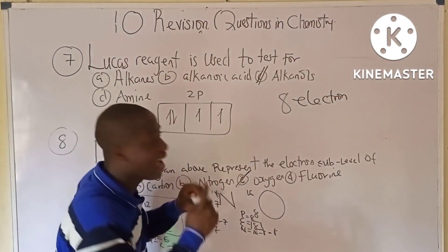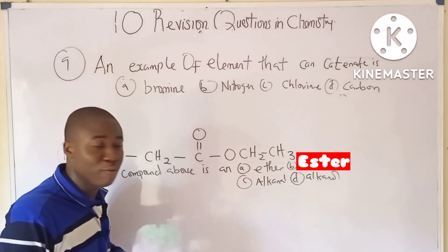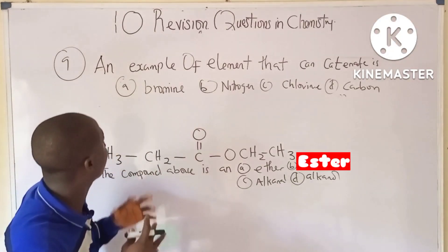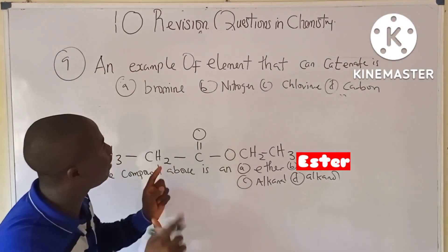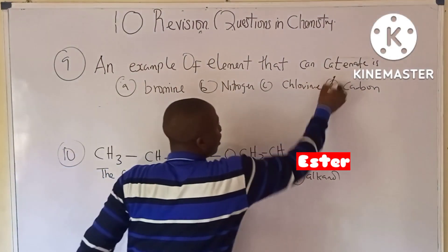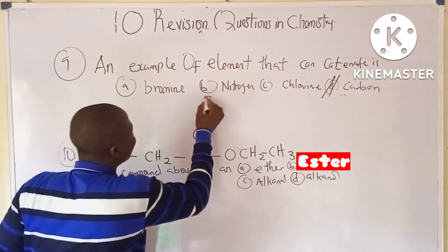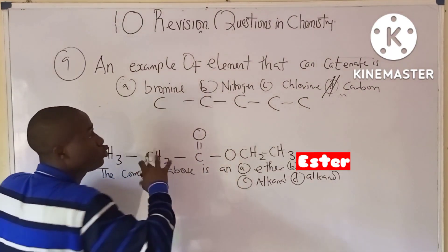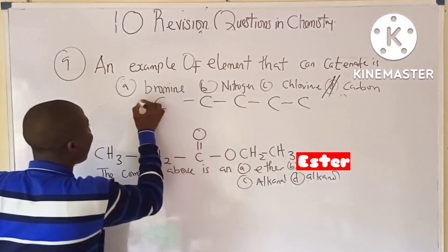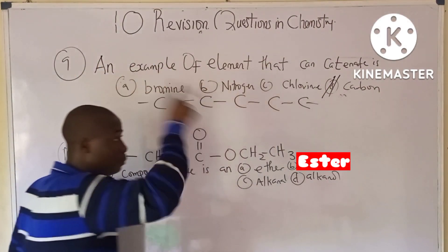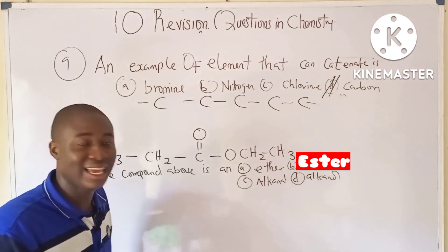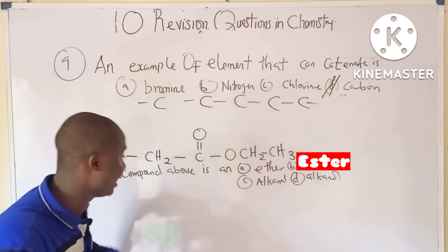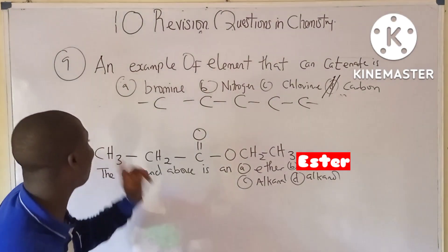Question nine: an example of an element that can catenate is carbon. Carbon is the most extensive catenating element in chemistry, having the ability to form very long chains.